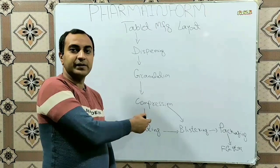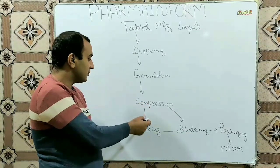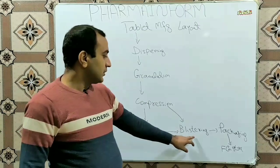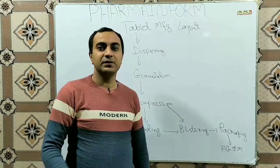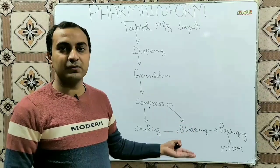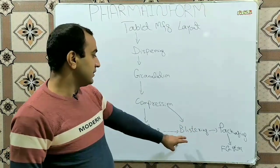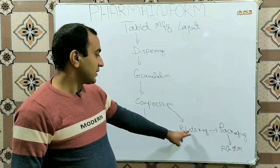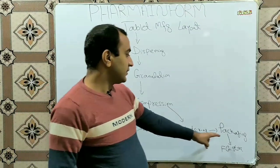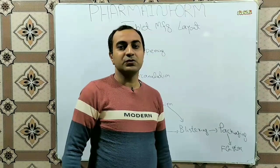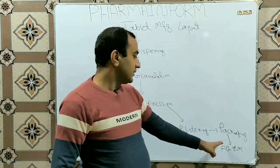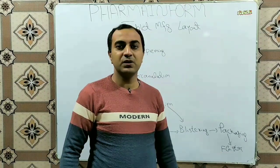After compression, we coat our tablets, and after coating, we blister the coated tablets. It may be in the form of ALU-ALU blister, PVDC, or PCTFE blisters. When the tablets are blistered, these blisters are packed into cartons and then shippers. Then it is ready to be sent to the finished goods store.